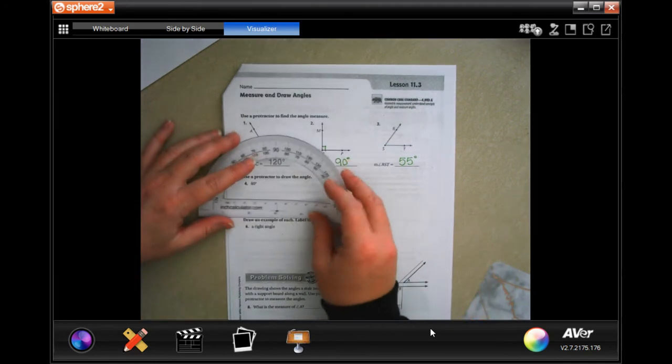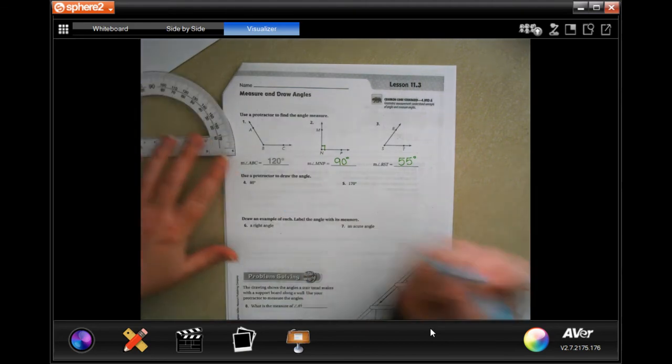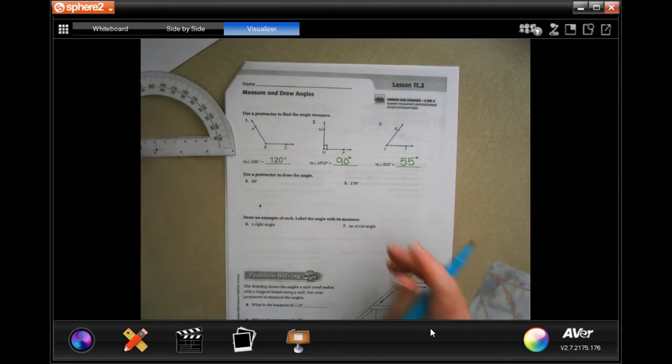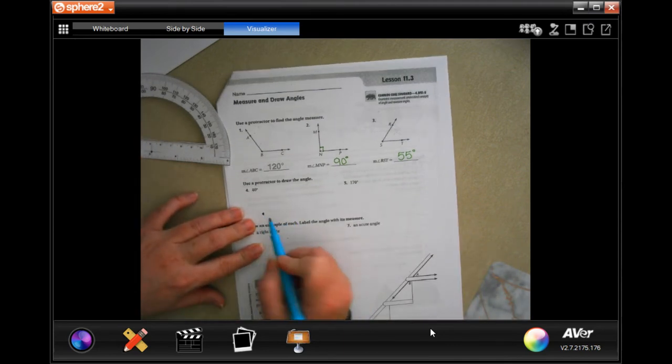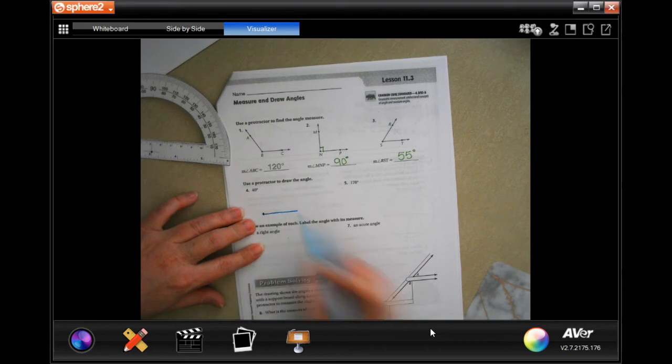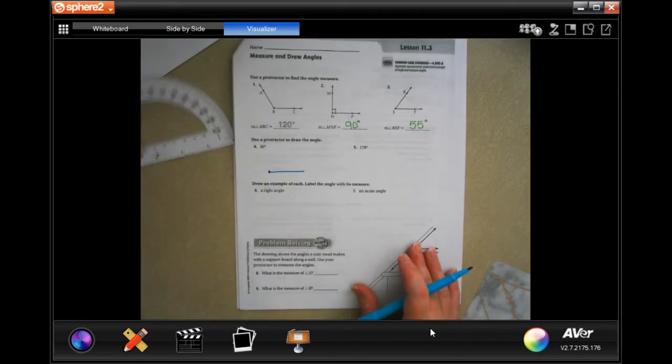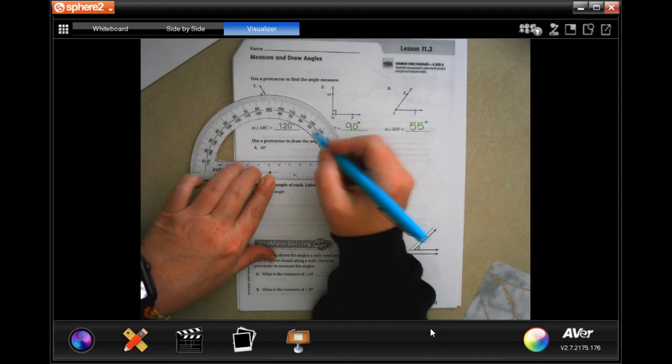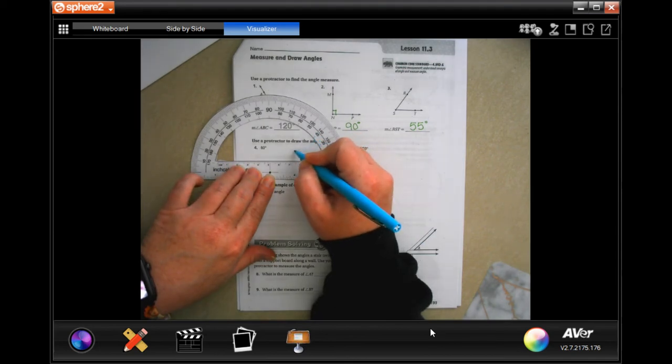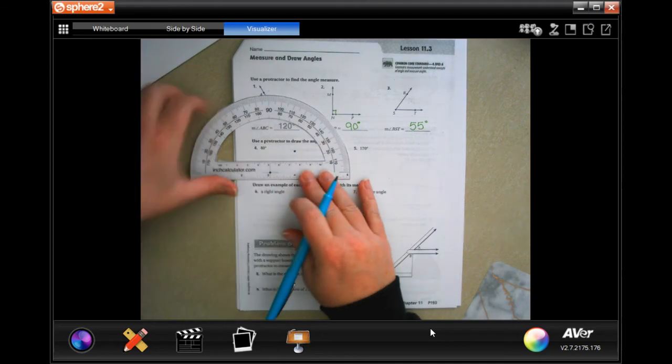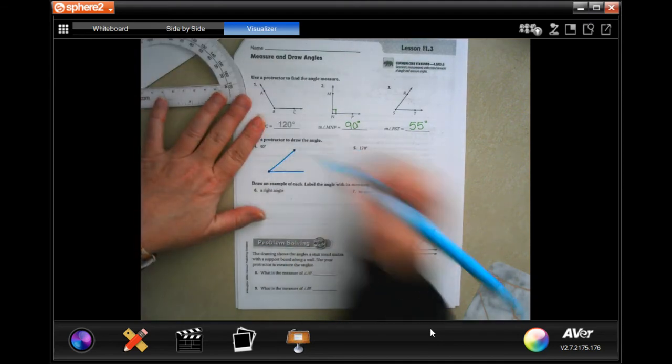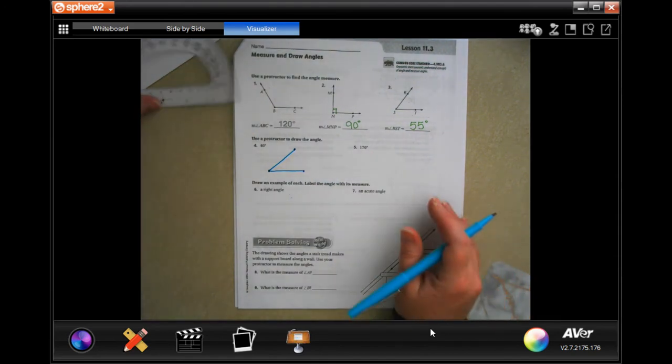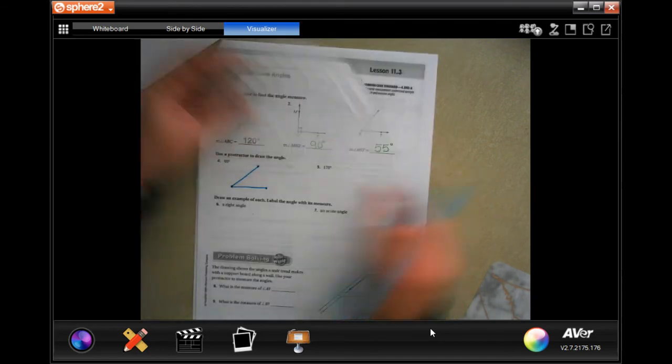Now I'm gonna go ahead and this one says use the protractor to draw the angle. So I'm gonna put a dot in and I'm gonna put one going straight. Now I'm gonna put that dot on my protractor and I'm gonna go 40 degrees is right about there. Now I'm gonna connect it. Done. Pretty easy, guys.